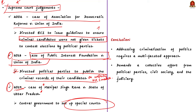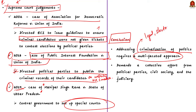Finally, in the conclusion part, you can write that addressing the criminalization of politics in India requires a multifaceted approach through legal, electoral and social reforms. It demands a collective effort from political parties, civil society and judiciary to strengthen democratic institutions and restore public faith in the political process. In this discussion, we saw what criminalization of politics is, the reasons for its increase, the challenges posed, and the steps taken to combat it.